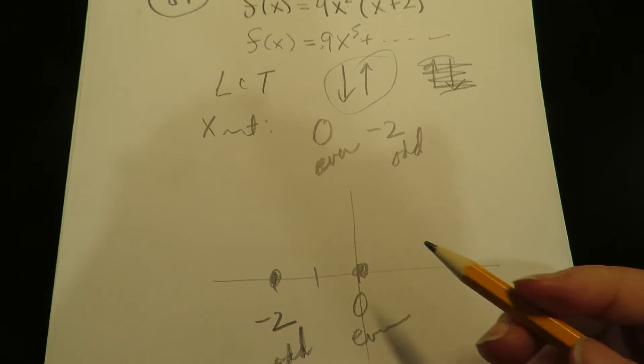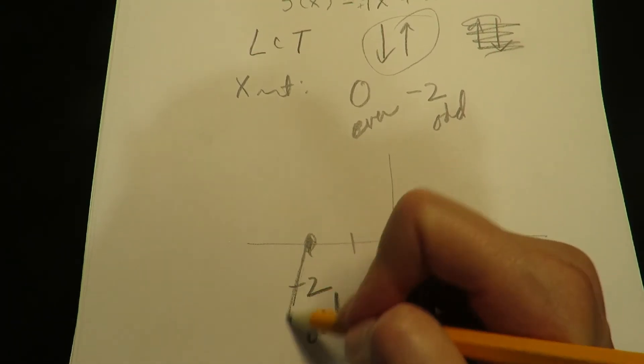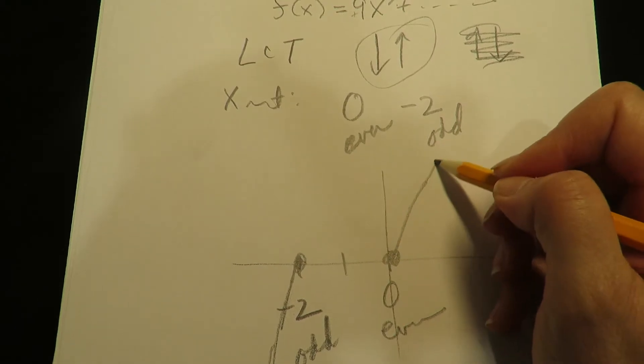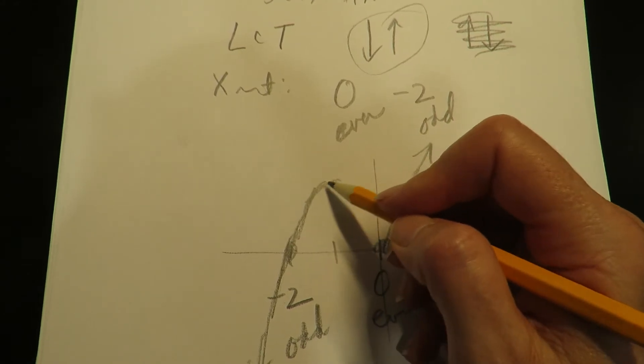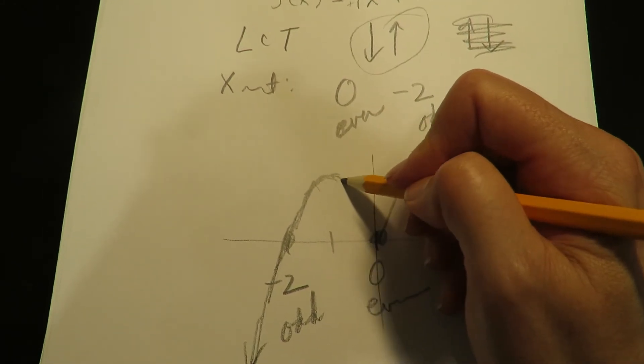And we said on the ends that we're going down on the left, up on the right. So odd means I go through. I don't quite know how high I go till I take calculus, right?